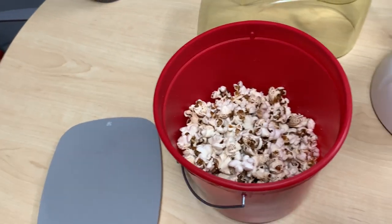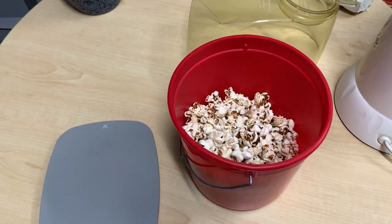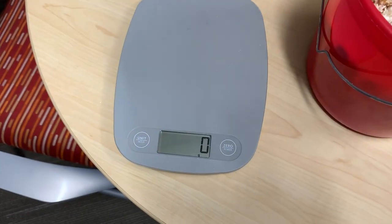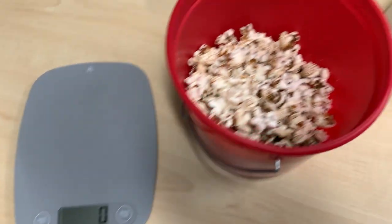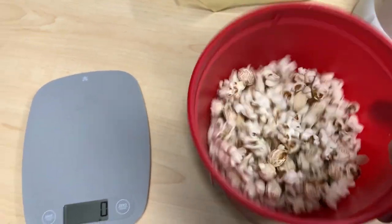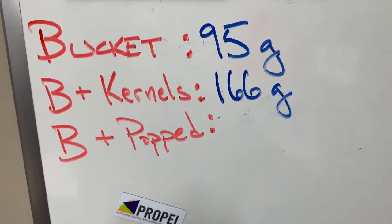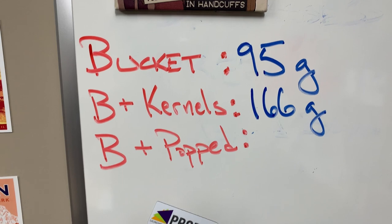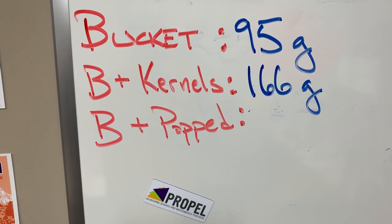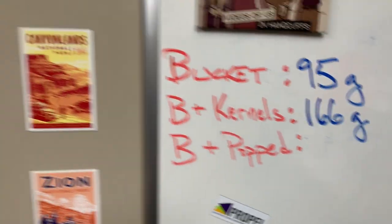I really want to eat some of that, but instead, I've got my zeroed scale, my bucket plus popcorn, and I'm going to weigh this. Originally, the bucket by itself, 95, kernels 166. Let's see what happened.